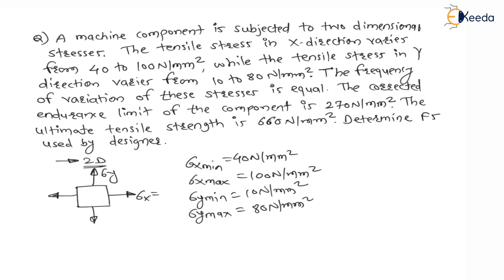The frequency of variation of these stresses is equal, meaning they are fluctuating with the same frequency. The corrected endurance limit of the component is SE = 270 N/mm². The ultimate tensile strength is SUT = 660 N/mm². Determine the factor of safety used by the designer.